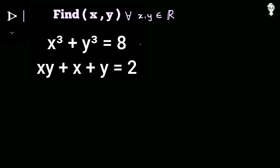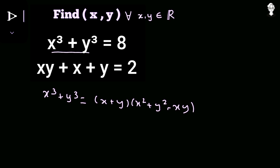First, look at the LHS part of the first equation: it is x³ + y³, which is an algebraic identity. The identity states that x³ + y³ can be written as (x + y)(x² + y² − xy). This factor can replace the LHS, and that value already equals 8 as per the first equation.